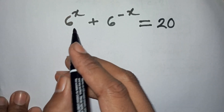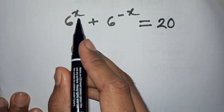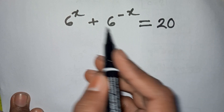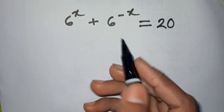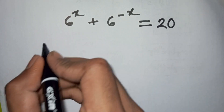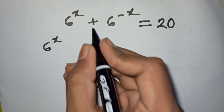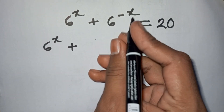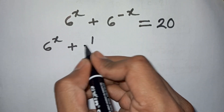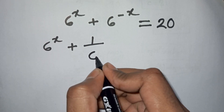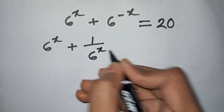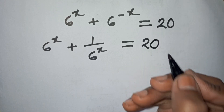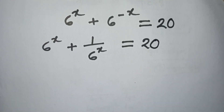How to solve 6 to the power x plus 6 to the power negative x is equal to 20. What is the value of x? We have 6^x plus 6^(-x), which is the same as 6^x plus 1 over 6^x, equals 20.